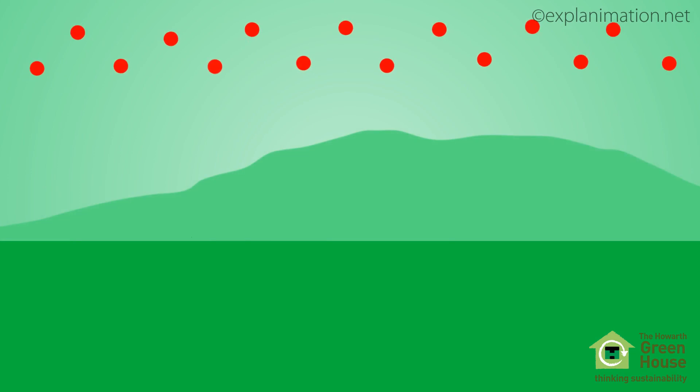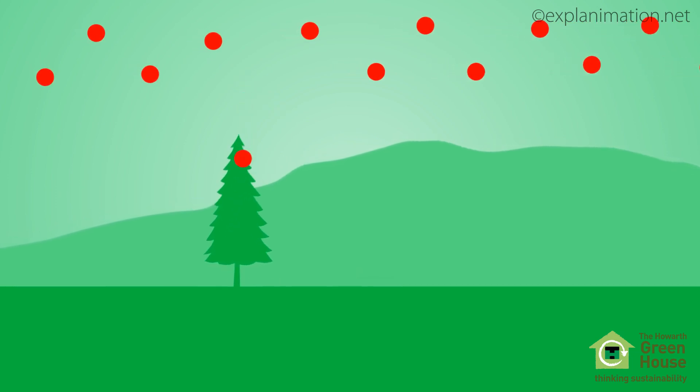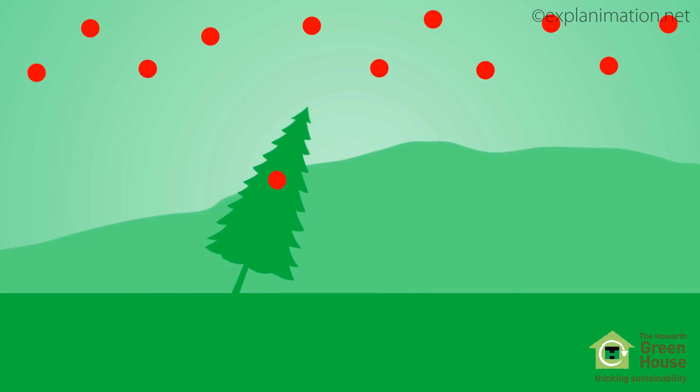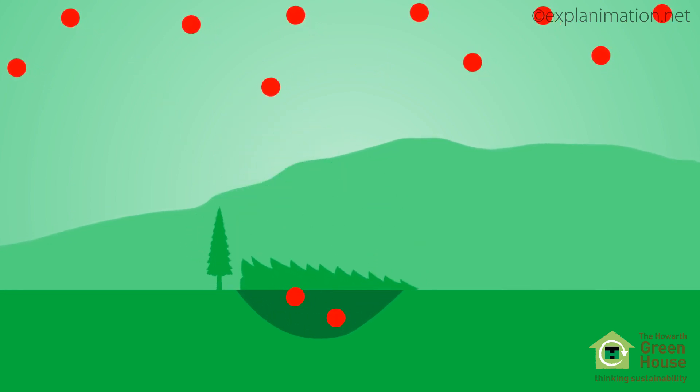Plants absorb carbon dioxide or CO2 from the air as they grow. When they die, some of the carbon from the CO2 remains trapped in the decaying vegetation.